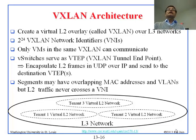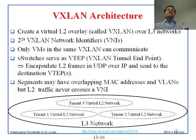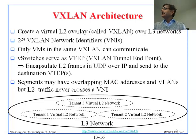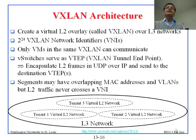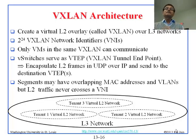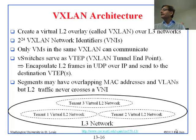VXLAN is very similar to NVGRE, except they use a different protocol. The tunnel endpoint is called VTEP, which is generally a virtual switch in the hypervisor. The V switches serve as VTEPs and encapsulate L2 frames in UDP over IP. In NVGRE we used GRE, but here we use UDP over IP and send to the destination where it will be opened and the packet delivered.